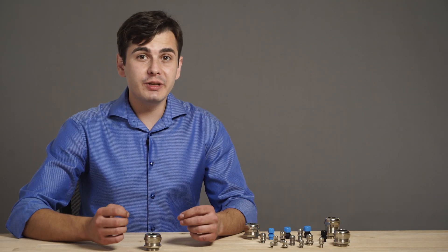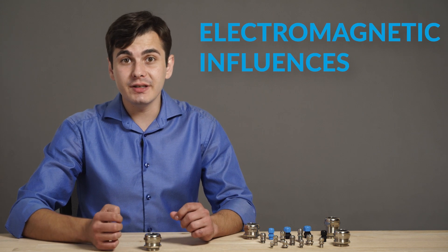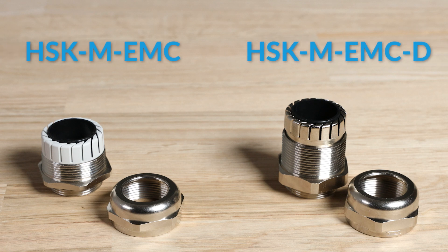Another hazard for your electronic components that is becoming increasingly important is electromagnetic influences. Hummel cable glands with EMC protection are available in different versions such as HSKM-EMC and HSKM-EMC-DE.